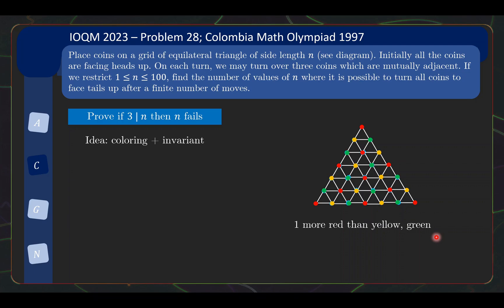So what is this invariant that we want to set up? Well, we have to use the fact now that if we hit a small triangle, we will be hitting one red, one yellow, and one green coin. So what we'll do is we'll define T_red to be the number of red coins that are currently tails up, T_yellow to be the number of yellow coins that are tails up, and T_green similarly defined.